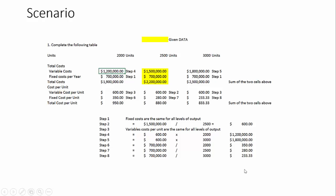In step 1, the fixed costs are the same for all levels of output. So that $700,000 would go under the 2,000 unit scenario as well as the 3,000 unit scenario.